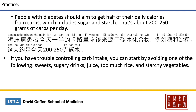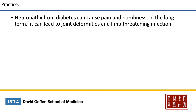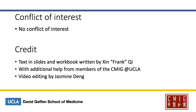If you're having trouble controlling carb intake, you can start by avoiding one of the following: sweets, sugary drinks, juice, too much rice, and starchy vegetables. In Chinese: 如果您有困难控制碳水摄入，您可以从避开以下的一种食物开始，例如甜品、含糖饮料、果汁、过量的米饭，或淀粉类蔬菜。 Lastly, neuropathy from diabetes can cause pain and numbness. In the long term it can lead to joint deformities and limb-threatening infection: 糖尿病导致的神经损伤会引起疼痛和麻木感。长期损伤会导致关节变形和威胁肢体的感染。